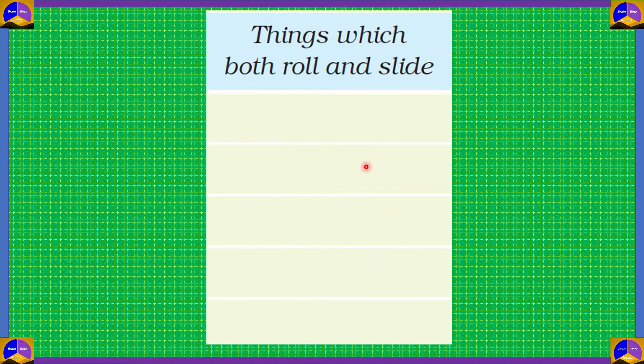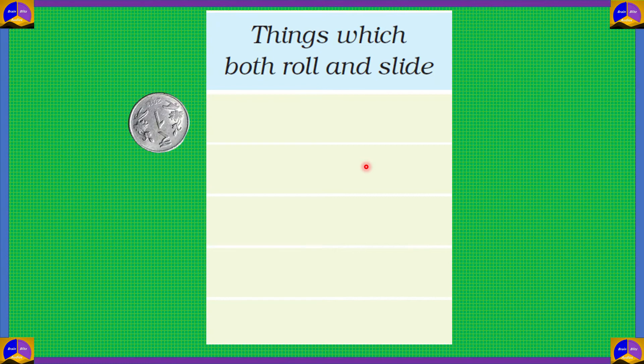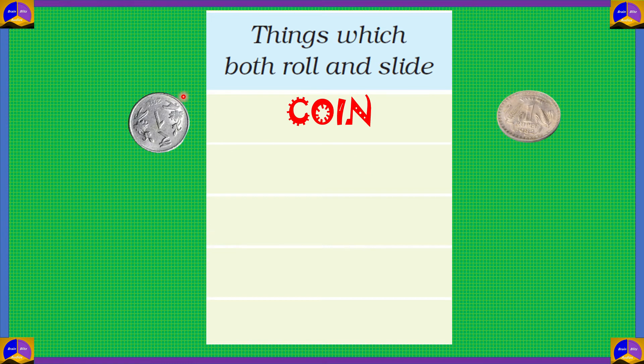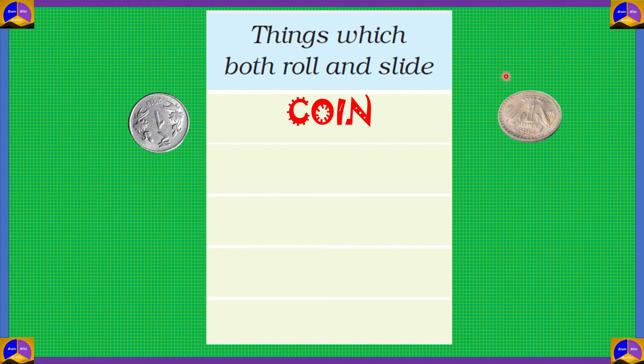Now, some things can both roll and slide. Let's look at them. First, we have a coin. This coin, if you put it in this position, then it rolls. But if you put it on the table and then push it, then it slides.